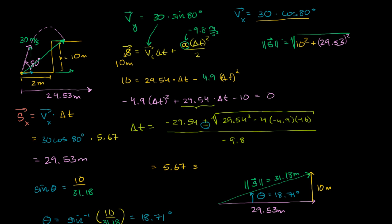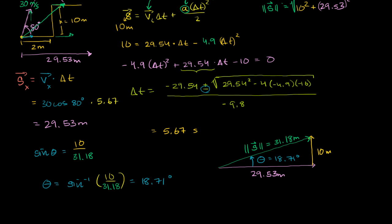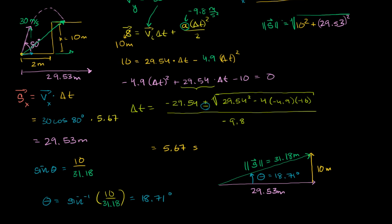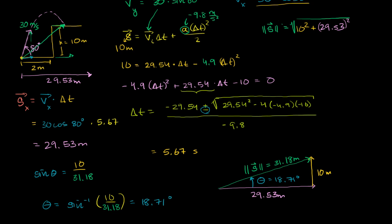In the last video, I told you that we would figure out the final velocity of when this thing lands, so let's do that. I forgot to do it in the last video. So let's figure out the vertical and the horizontal components of that final velocity, and then we can reconstruct the total final velocity.